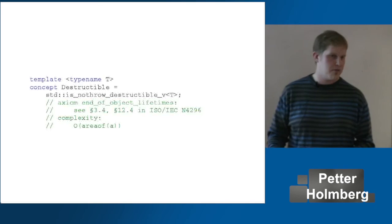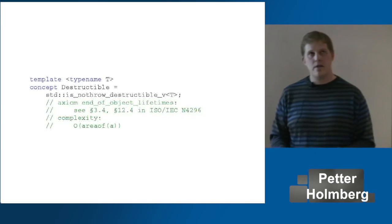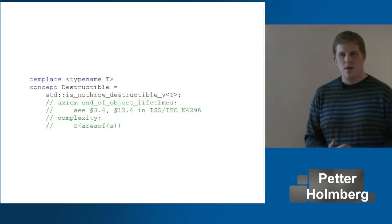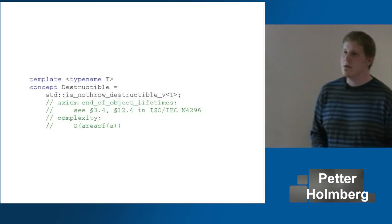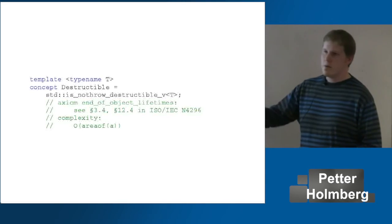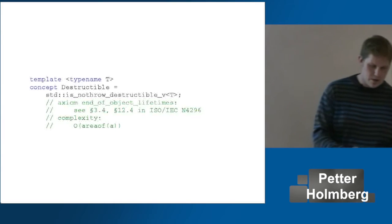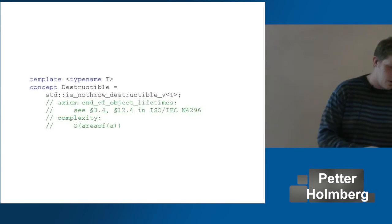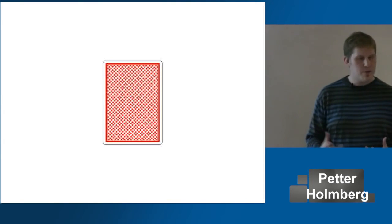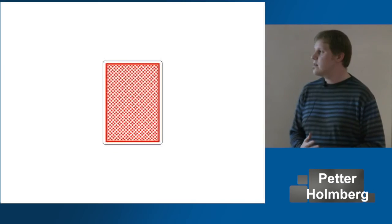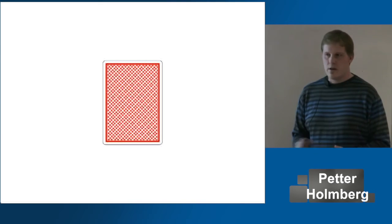What's the complexity of a destructor? It's nice to think that it should be constant time, but you may be in a system where you have to write zeros to hold the memory you release for security reasons. So we say it's complexity linear in the area of the object that we destroy. So now semi-regular type is assignable and destructible. And if we are able to destroy objects, of course we need to be able to create them in the first place as well. So we need some form of constructor.